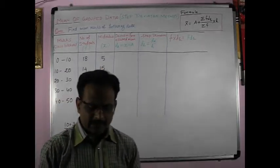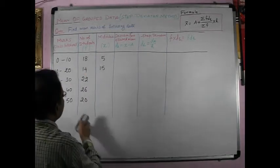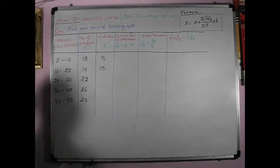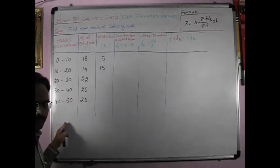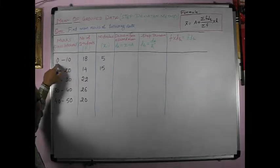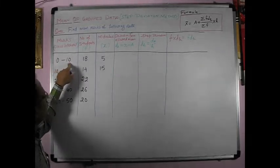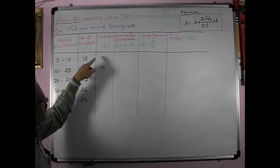Now, we have a simpler method. What we have to do here? If you have the calculation, the class width are same. Class width 0 to 10, 10 to 20, the difference is same. So, what we will do? We will first find out the mid-value of first class. This is the first class, 0 to 10. 0 plus 10 divided by 2 is 5.